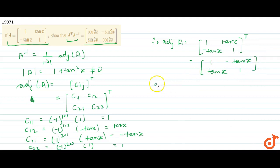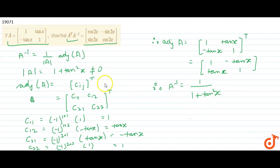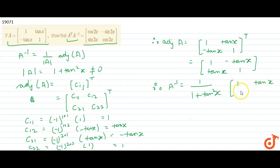Therefore A inverse equals 1/(1 + tan²x) multiplied by the adjoint matrix, which gives us 1/(1 + tan²x) times [1, -tan x; tan x, 1].